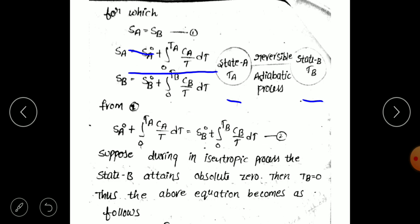Here, C_A means the heat capacity of the substance in state A, and C_B means the heat capacity of the substance in state B. From equation 1, substituting the S_A and S_B values, we get: S_A⁰ plus integral from 0 to T_A of C_A over T dT equals S_B⁰ plus integral from 0 to T_B of C_B over T dT. This is equation 2.